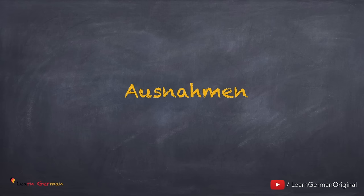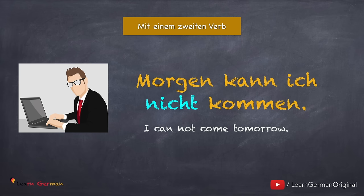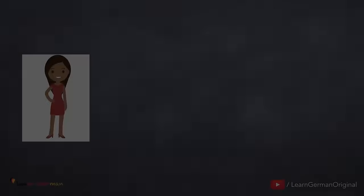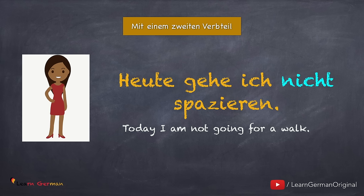In folgenden Beispielen steht NICHT nicht am Ende. Zum Beispiel, wenn es ein zweites Verb gibt: Morgen kann ich nicht kommen. Hier steht NICHT vor dem zweiten Verb. Oder wenn es einen zweiten Verbteil gibt, wie das Präfix von einem trennbaren Verb: Heute gehe ich nicht spazieren. Hier steht NICHT vor dem Präfix.